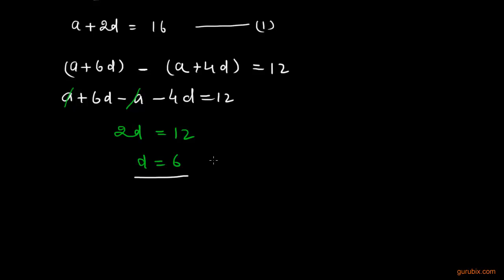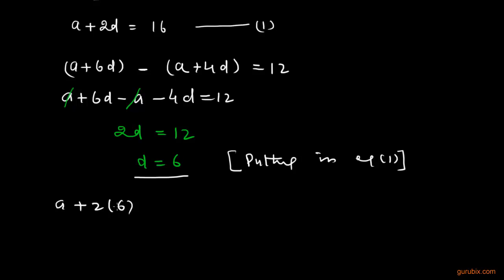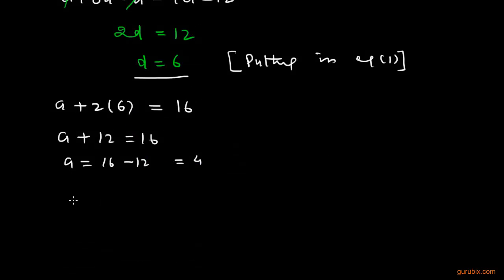Now we put D equals 6 in equation 1. So A plus 2 into 6 equals 16, which gives A plus 12 equals 16, and therefore A equals 16 minus 12, which means A equals 4. Therefore, the first term is 4.